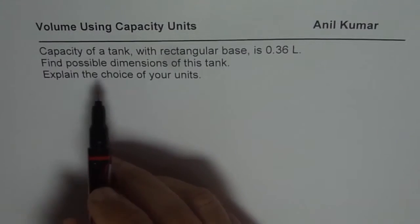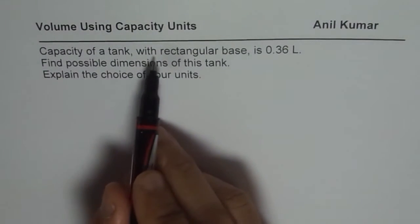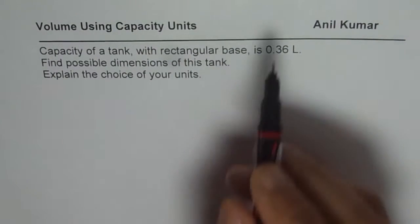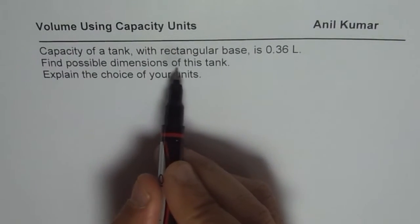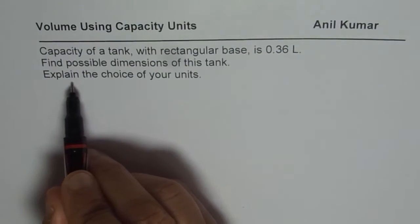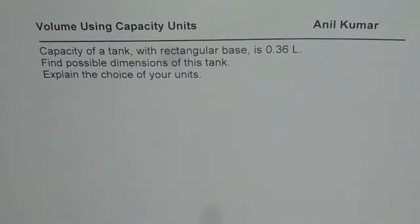The question here is: capacity of a tank with rectangular base is 0.36 liters. Find possible dimensions of this tank. Explain the choice of your units. So that is the question.